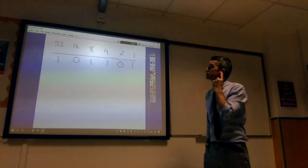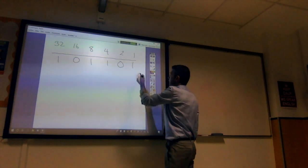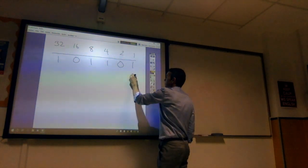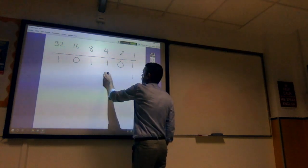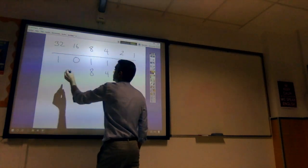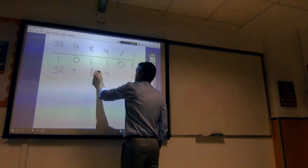So 1, 0, 1, 1, 0, 1. Again, start from the least significant bit at the right-hand side. Purple this time. So we've got 1, 4, 8, and 32. And we add those together.